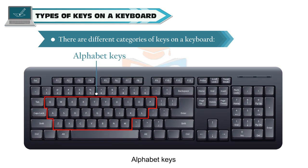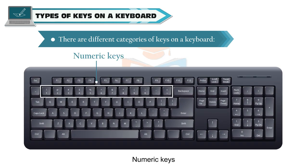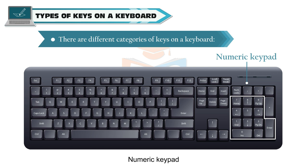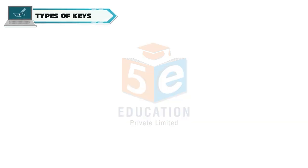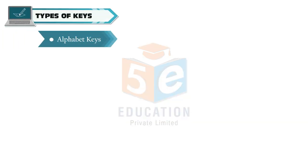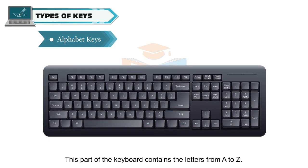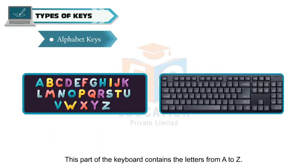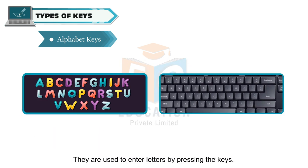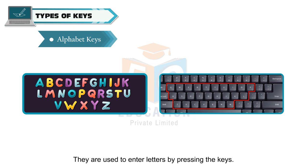The different types of keys on a keyboard include alphabet keys, numeric keys, numeric keypad, special keys, function keys, and navigation keys. The alphabet keys section of the keyboard contains the letters from A to Z, and they are used to enter letters by pressing the keys.